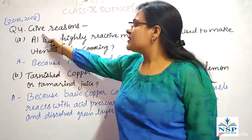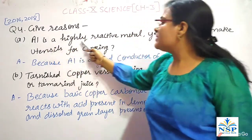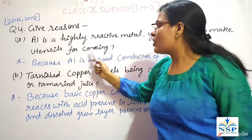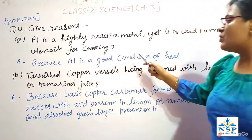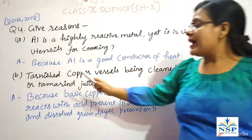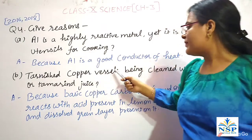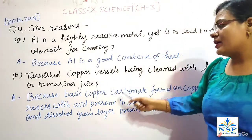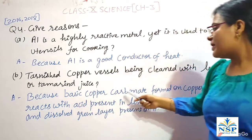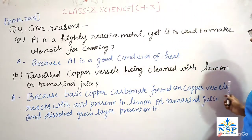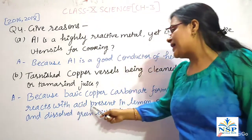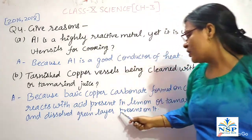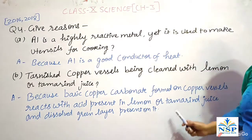Our next important question: give reasons. First, aluminium is a highly reactive metal yet it is used to make utensils for cooking, because aluminium is a good conductor of heat. Second, tarnished copper vessels are cleaned with lemon or tamarind juice because basic copper carbonate formed on copper vessels reacts with the acid present in lemon or tamarind juice and dissolves the green layer present on it.